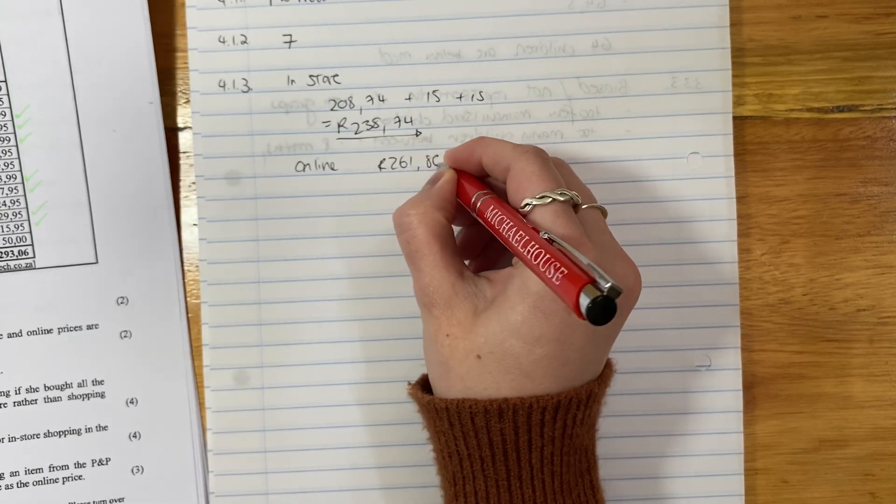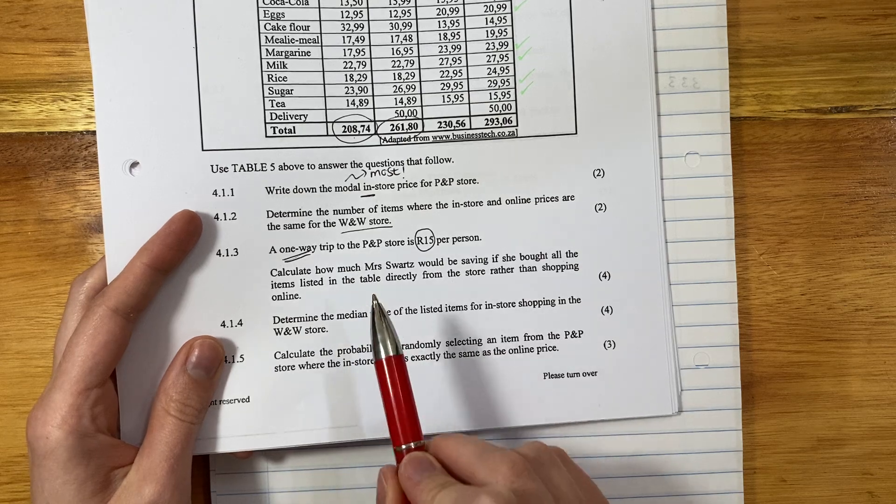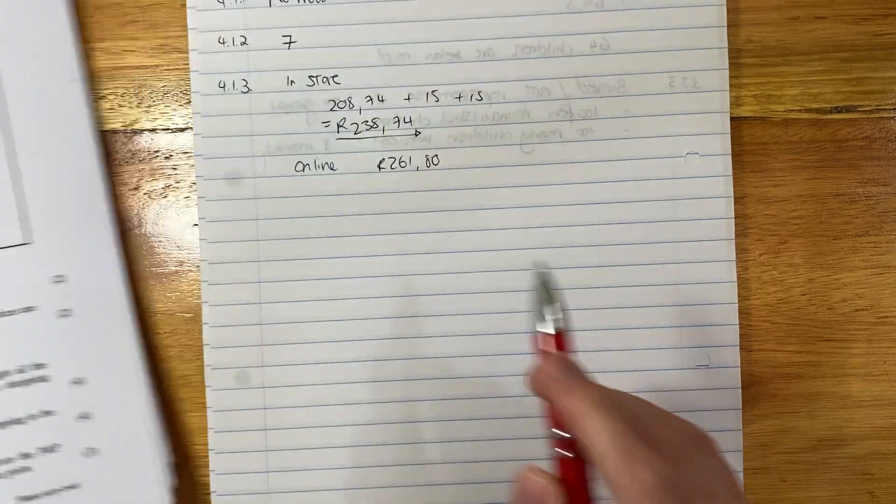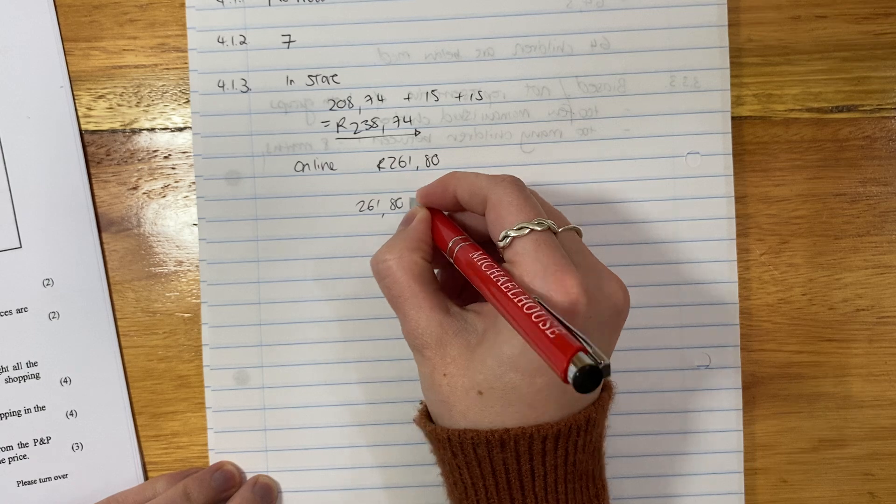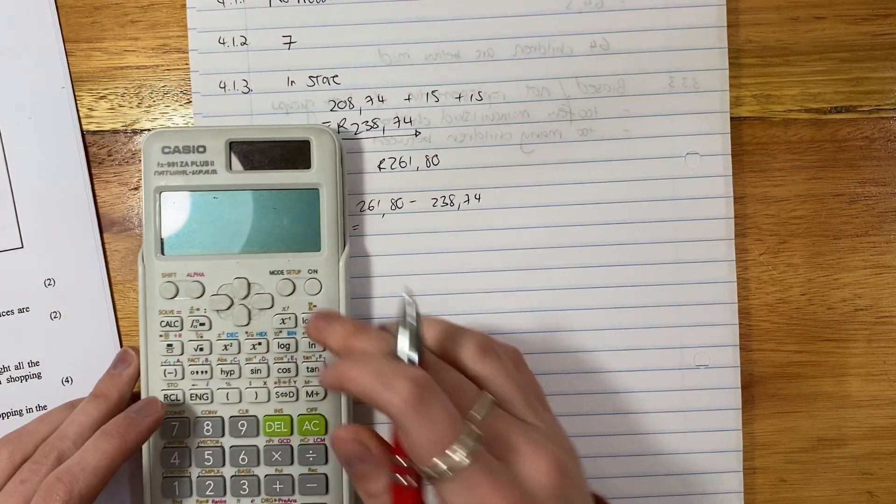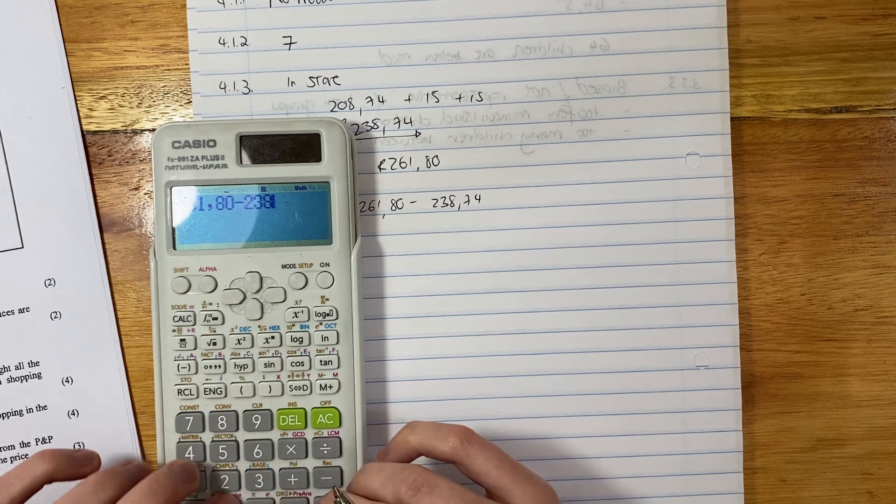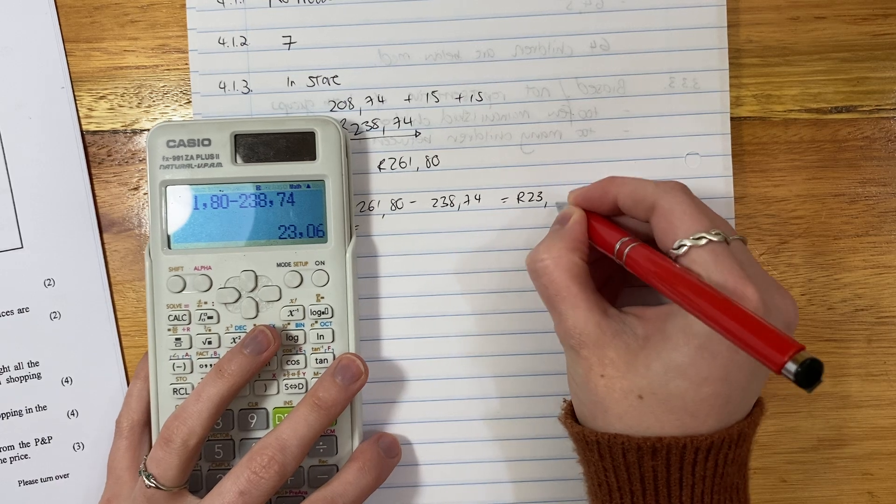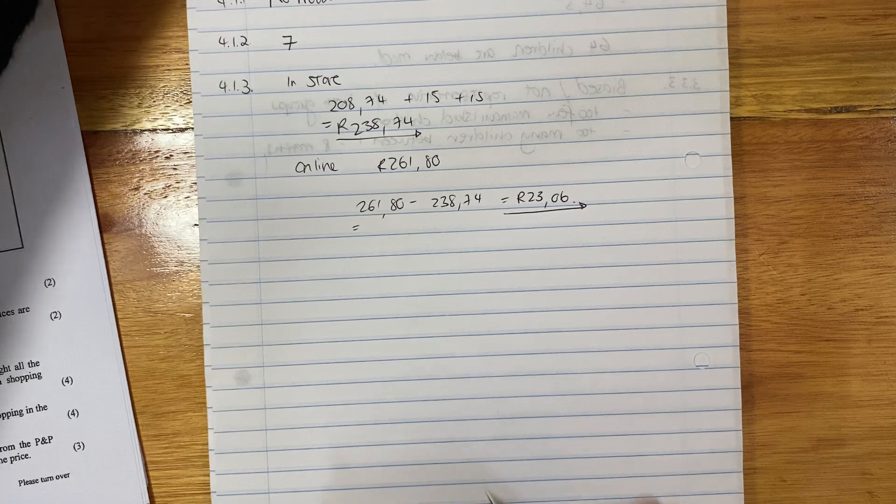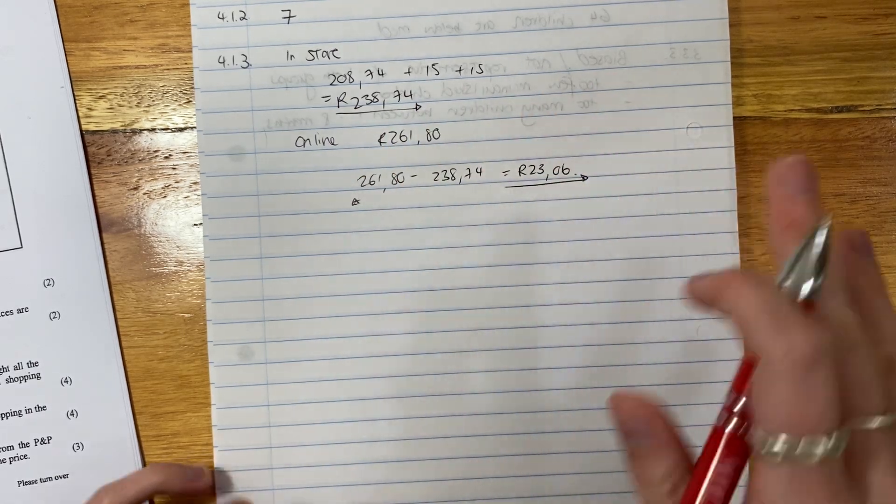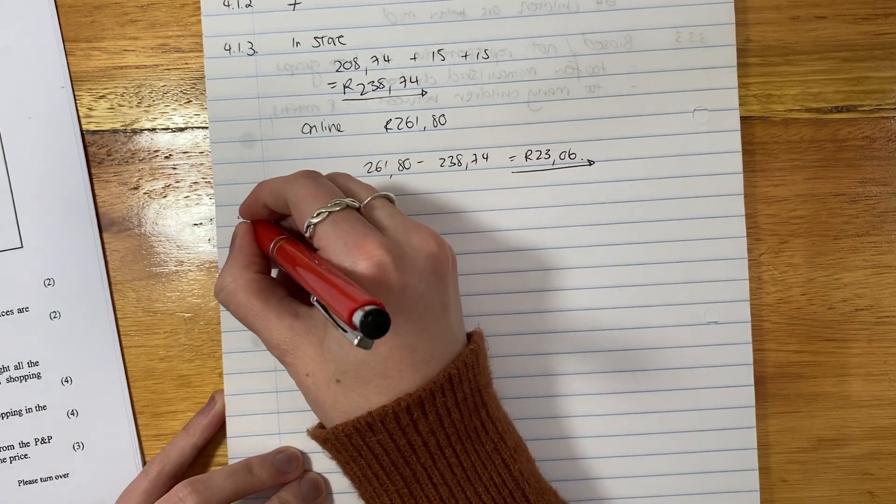Online, how much is it? 261.80. But the question asked us, calculate how much she would be saving if she bought all the items in the table directly from the store. So we're not done yet. We have to say 261.80 minus 238.74. The difference is 23.06. That's how much she's saving. Just be careful that you do every part of it, because students often get to there and then they stop. You must make sure that you answer every aspect.